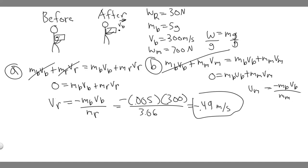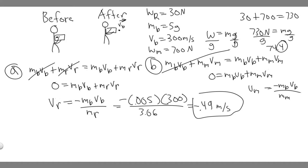To find the combined mass, we know the weight of the rifle is 30 newtons and the weight of the man is 700 newtons, so their total weight is 730 newtons. Dividing by g: 730 divided by 9.8 gives us 74.4 kilograms. That's the combined mass of the man and the rifle.